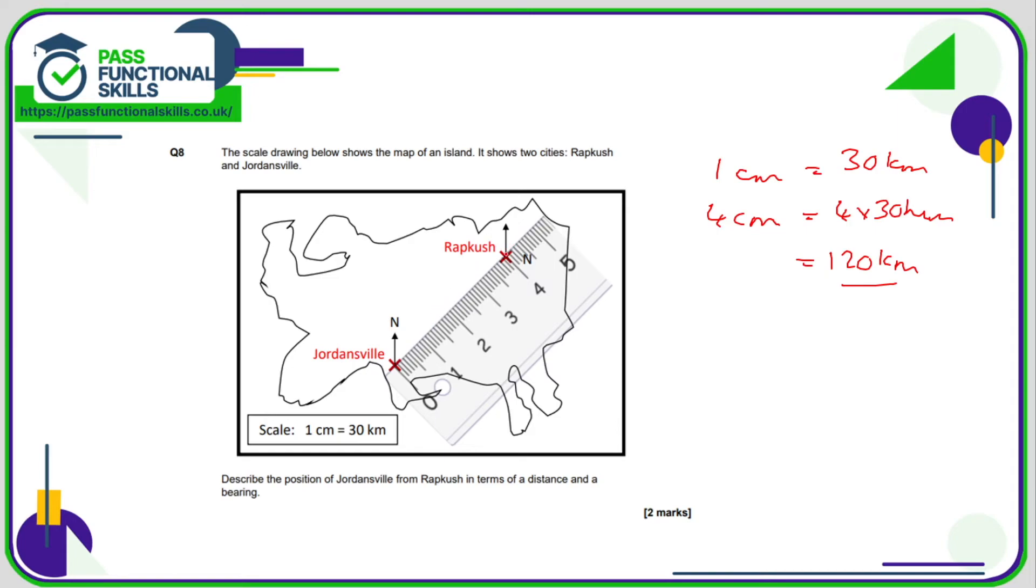We need to measure the angle. The angle we are measuring is this angle here, because this is the bearing of Jordansville from Rappcush. Now if you're using a protractor, you might only have a protractor which goes up to 180 degrees. In which case what you could do is just draw a line here, extending that north line down southwards. We know that this is 180 degrees here, and now you just need to measure this angle here. Alternatively, what you could do is instead of working out the bearing of Jordansville from Rappcush, work out the bearing of Rappcush from Jordansville, and then either add or subtract 180 degrees.